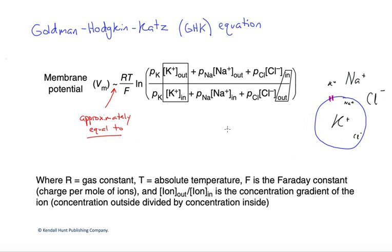Another thing to point out is that our chloride concentrations are actually flip-flopped relative to the cations. Those are out over in for both of them, whereas chloride is in over out.